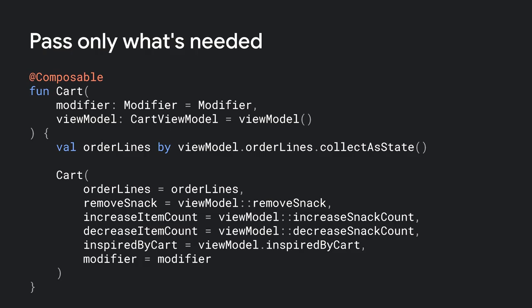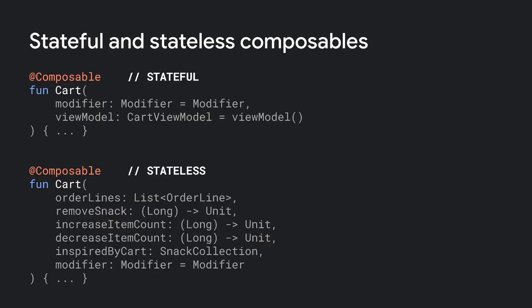Apart from this, we also provide a stateful overwrite that is opinionated in the way it handles state and events. This version of Cart calls the stateless Cart composable using a CartViewModel that handles business logic and state. This pattern of having both stateful and stateless — or less stateful — composables provides a good balance between reusability and having an opinionated way to use it in your app, using ViewModels that are well integrated with Compose navigation.